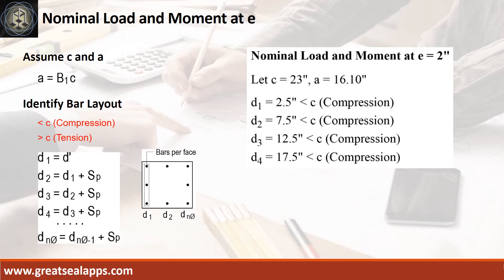To get the nominal load and moment at E equals 2 inches, let neutral axis C equals 23 inches, and depth of stress block A equals 16.1 inches. Given column size equals 20 inches and steel covering equals 2.5 inches, apply the computations below to get the following distances and force type of each layer of bars. D sub 1 equals 2.5 inches compression, D sub 2 equals 7.5 inches compression, D sub 3 equals 12.5 inches compression, D sub 4 equals 17.5 inches compression.